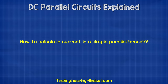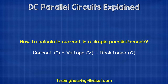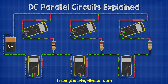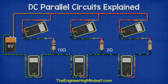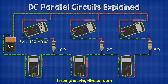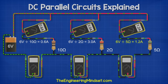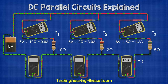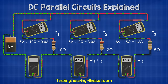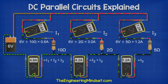How do we calculate the current in a simple branch? We use the formula current equals voltage divided by resistance. Let's say we have three resistors wired in parallel to a 6 volt battery: resistor one is 10 ohms, resistor two is 2 ohms, and resistor three is 5 ohms. For resistor one: 6 volts divided by 10 ohms gives us 0.6 amps. Resistor two: 6 volts divided by 2 ohms is 3 amps. Resistor three: 6 volts divided by 5 ohms is 1.2 amps. The current in the wire carrying only resistor three's branch is 1.2 amps. The wire carrying resistors two and three combined is 4.2 amps. The total current through the circuit is 4.8 amps.